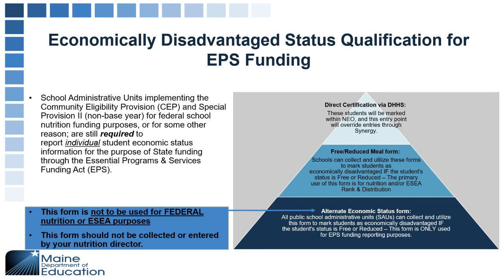We will be asking for students who are identified using the alternate economic status form — specifically their SSID numbers. For those moderating: in order for participants to see the answer to a question, you need to publish both the question and the answer.